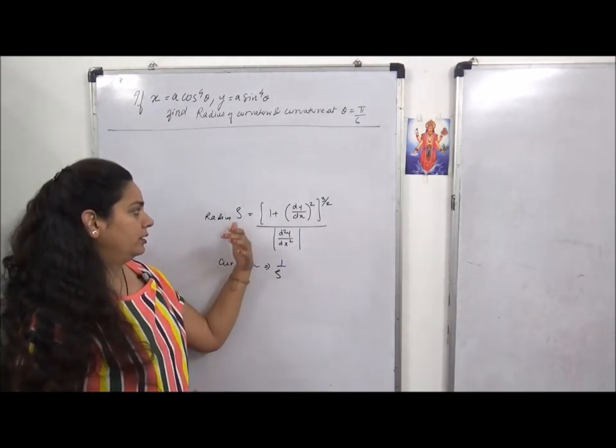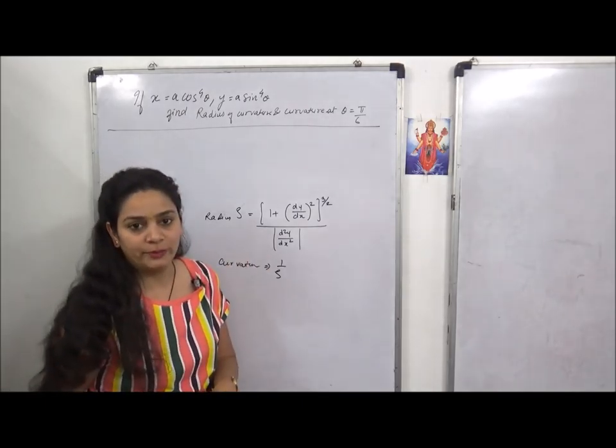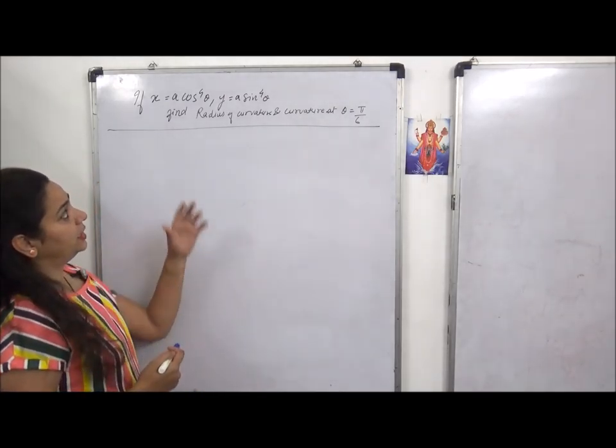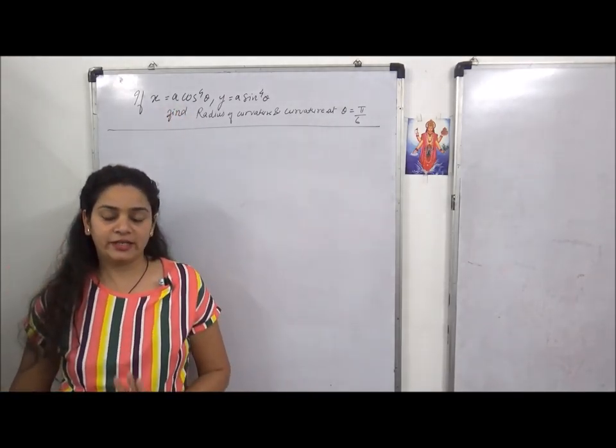If we have to find the curvature, then curvature is given by 1 upon rho. After finding radius of curvature, if I take one upon it, I will interchange numerator and denominator. So curvature and radius of curvature are two formulas you have to keep in mind.